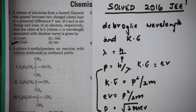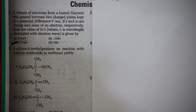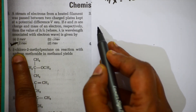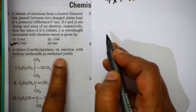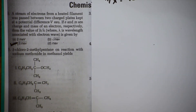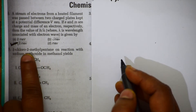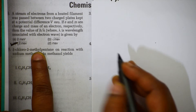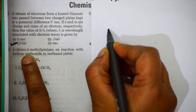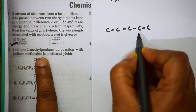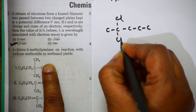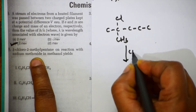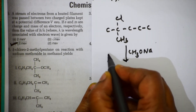The next question gives us 2-chloro-2-methylpentane on reaction with sodium methoxide in methanol, with four products given as options. Let's write out 2-chloro-2-methylpentane: pentane is 1-2-3-4-5, with chloro on the second carbon and a methyl group also on carbon 2. The reagent is sodium methoxide (CH₃ONa) in methanol (CH₃OH).